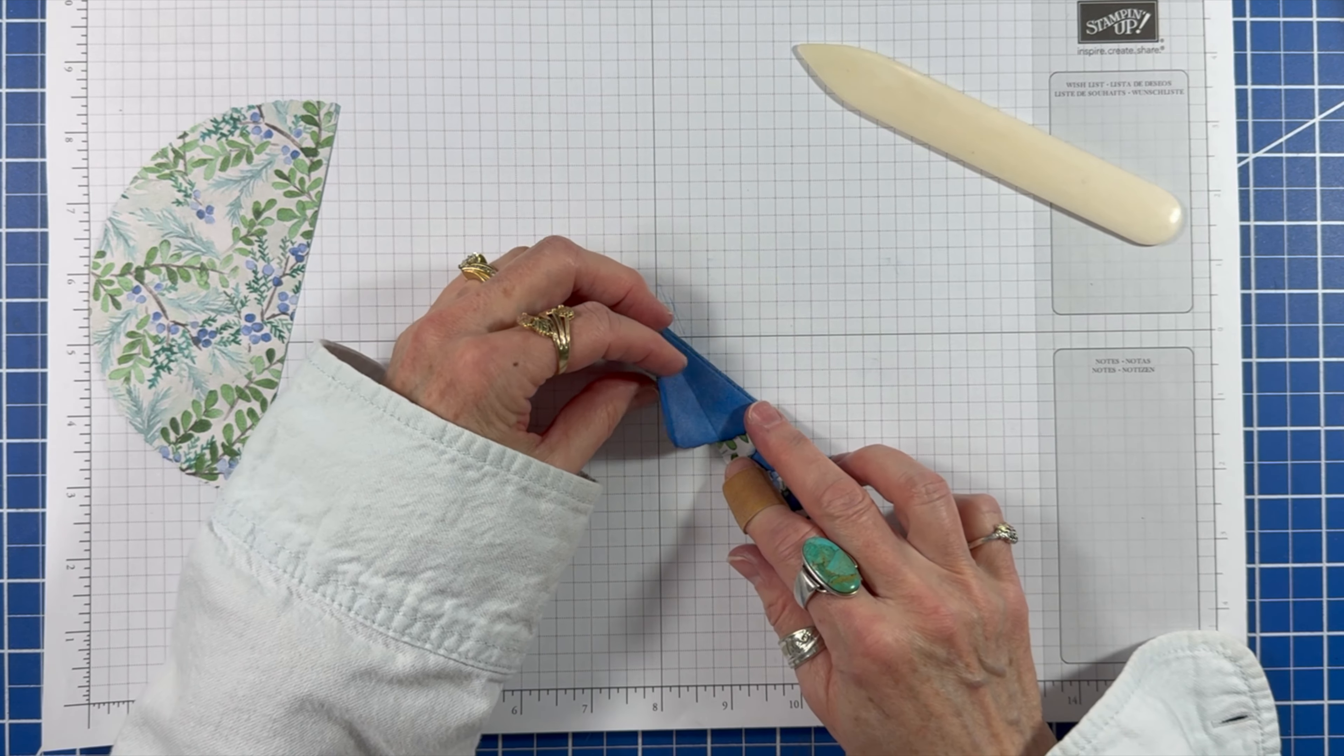Since the card base is dark I'm stamping an inside liner. And now it's time to decorate the trees with lots of sequins and wink of Stella to the large snowflakes. Brings it all to life. And here's a look at the finished card.